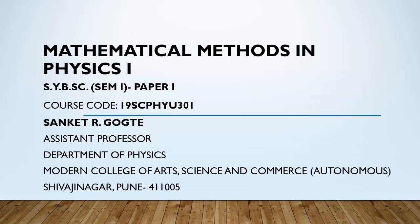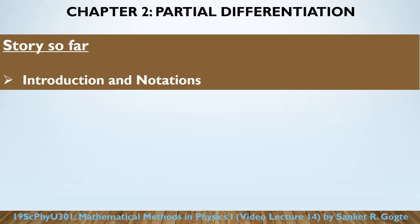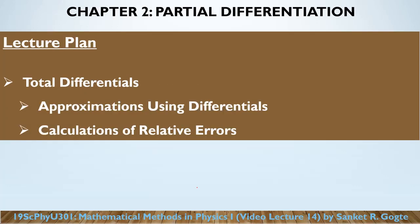Hello everyone, welcome to this video lecture of 19SCPHYU301. In the previous lecture we started discussing the second chapter on partial differentiation. Partial differentiations arise when we have a function which depends on more than one independent variable. Suppose this is a function which depends on n number of independent variables x1, x2, x3 up to xn. When we find the mth order partial differentiation of this function f of n variables, in general there are n raised to m number of different partial differentiations, and all of them can be different.